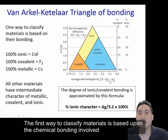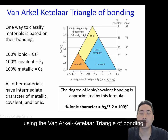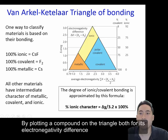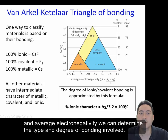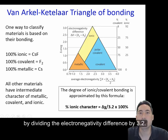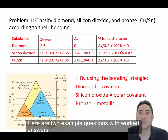The first way we classify materials is based upon the chemical bonding involved, using the Van Arkel-Ketelaar triangle of bonding. Both this and the electronegativity values are found in your data booklet. By plotting a compound on the triangle for both its electronegativity difference and the average electronegativity, we can determine the type and degree of bonding involved. A numerical value of the percentage ionic character of the bond is given by dividing electronegativity difference by 3.2. Here are two examples of worked answers.